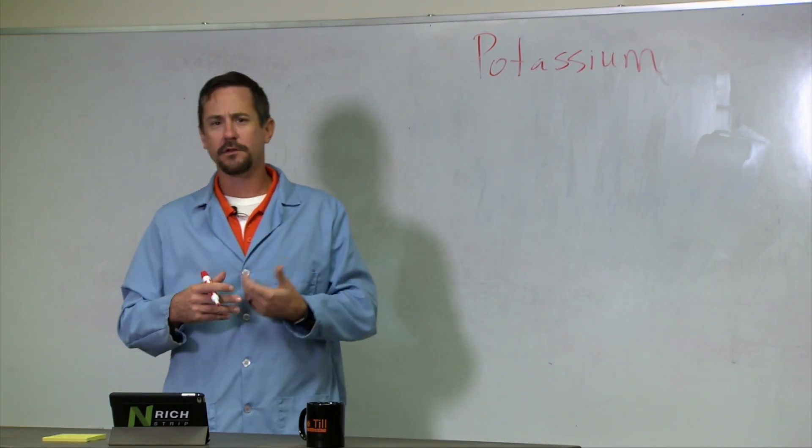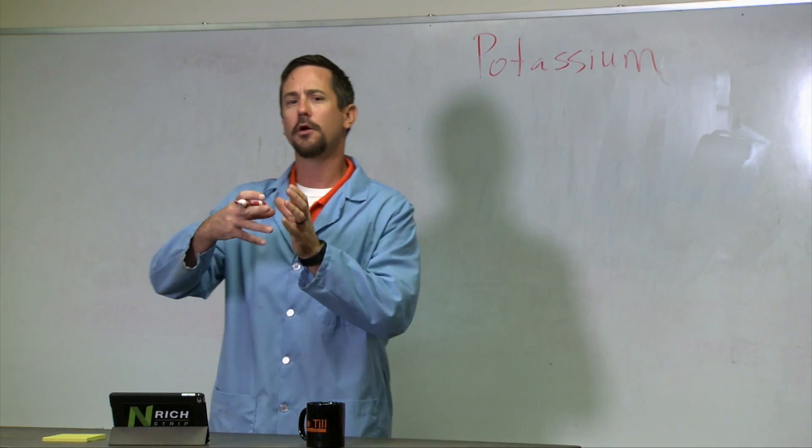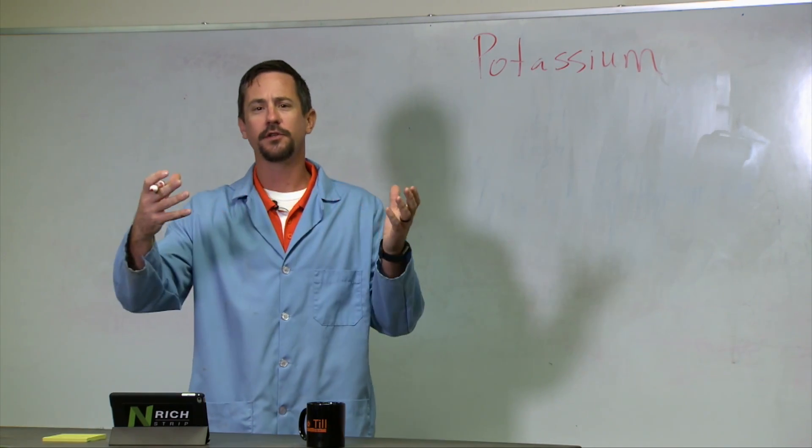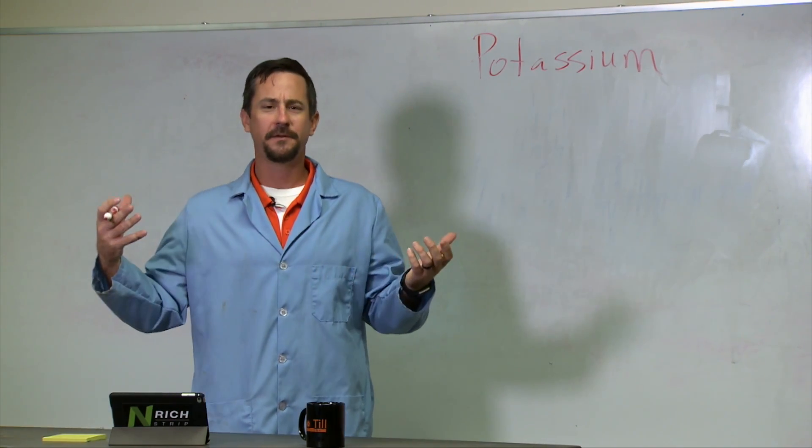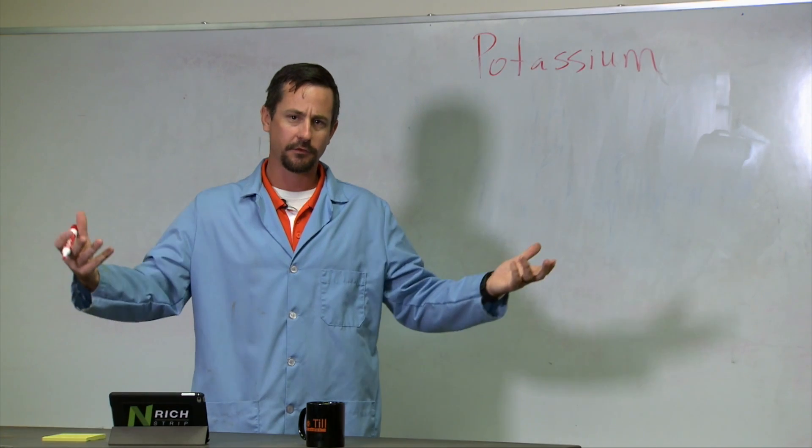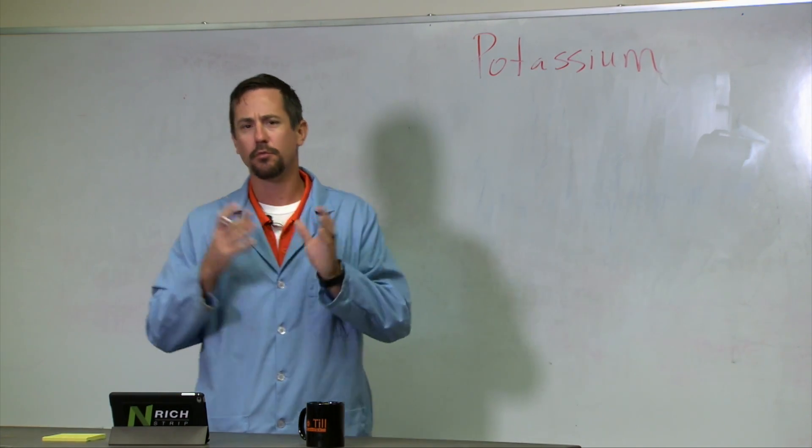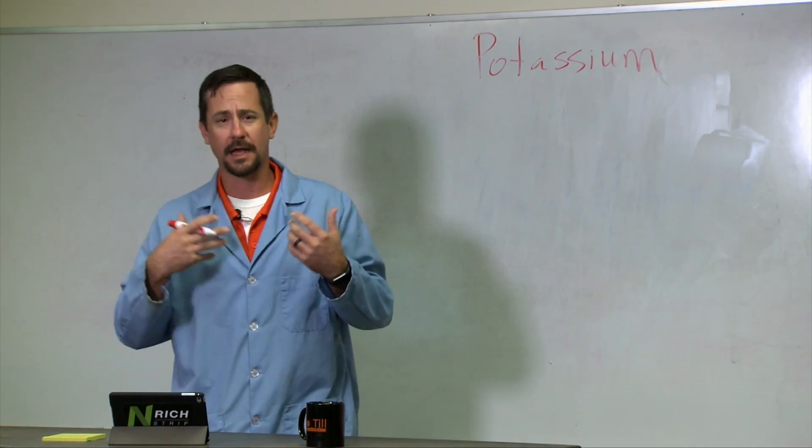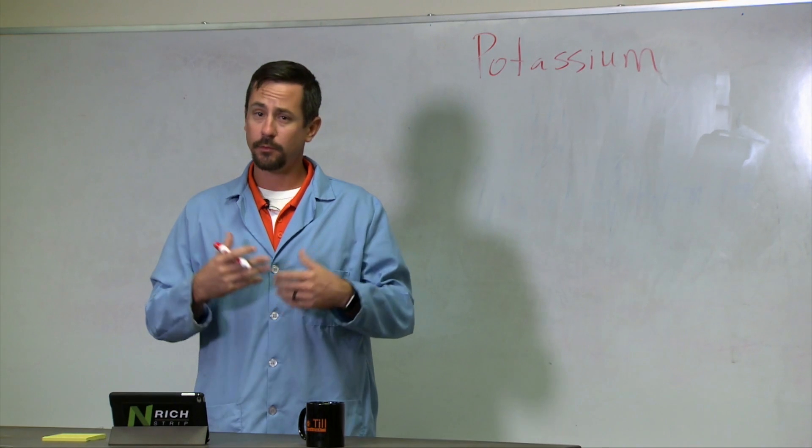Potassium is important in plants because it's used in the stomata, those openings on the leaves that help control moisture. So if we have a potassium deficiency in season during drought stress, the plant can't control moisture regulation as well as it could if it had been well fertilized with potassium or had enough potassium.